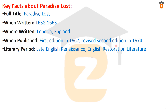With the two additional books added in 1674, it had a total of 12 books, which all other epic poems must have. The literary period during which it was written was the late English Renaissance and also the English Restoration period, because in May 1660 the Restoration period started in England, and at that time Milton was composing this magnum opus.